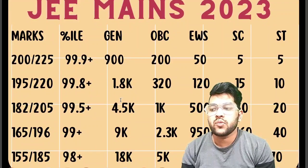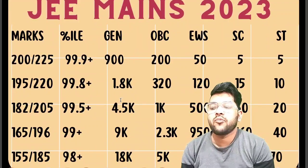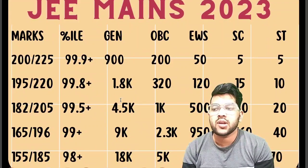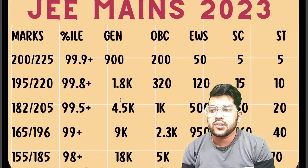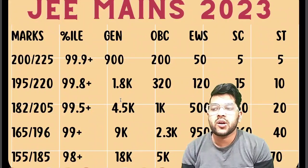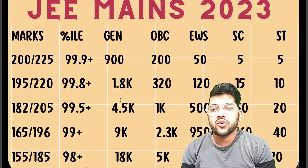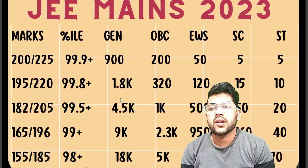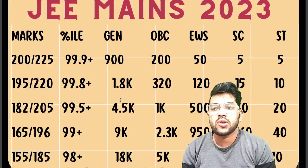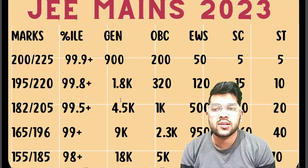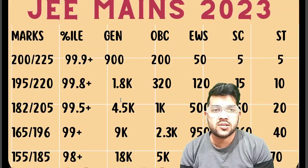For 98+ percentile, marks will be 155 for the first attempt and 185 for the second attempt. The corresponding ranks are: General (CRL) 18,000, OBC 5,000, EWS 1,900, SC 350, ST 70.